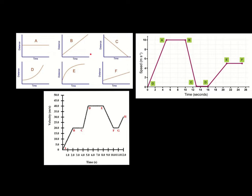On graph A, as time ticks by, distance is not changing. So what this is showing is that if this is a performer, they are simply standing still. As time ticks by, the distance is not increasing or decreasing — on this distance-time graph, A represents someone standing still.